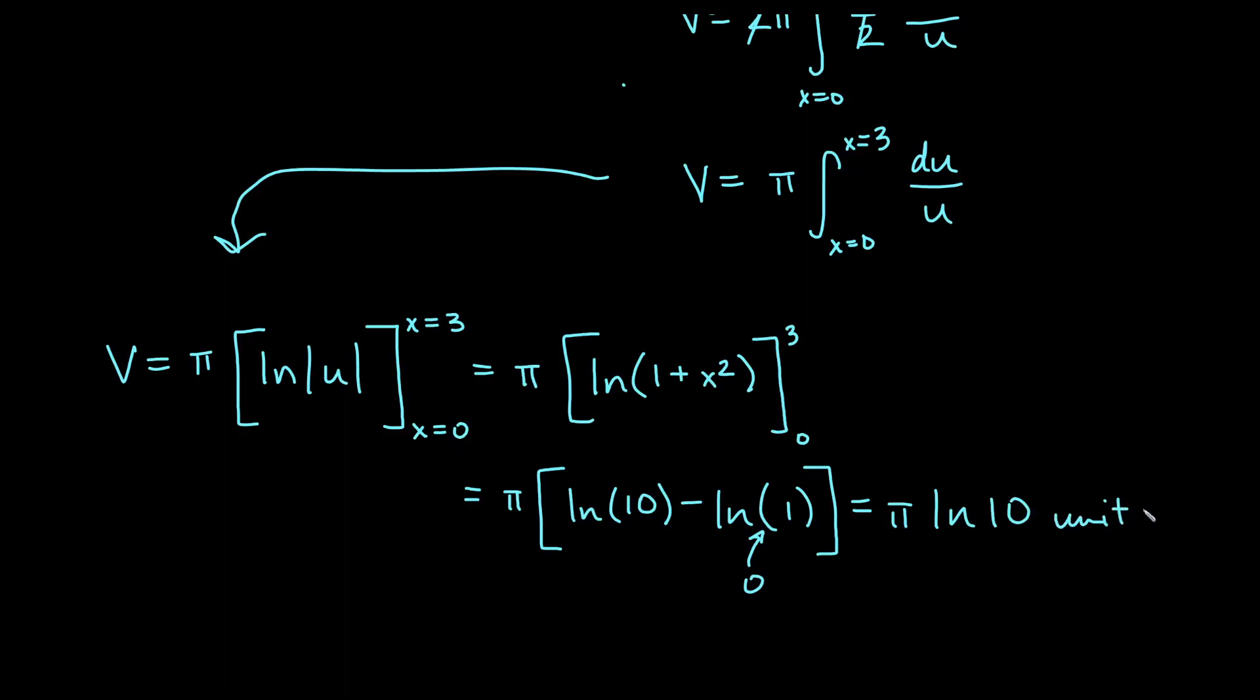So we'll just get π times the natural log of 10. And since it's volume, this will be units cubed. So a little bit of shell method that resulted in some u-substitution, but not so bad overall. Hope these shell method videos have been useful for you. Good luck on your solids of revolution, everyone.